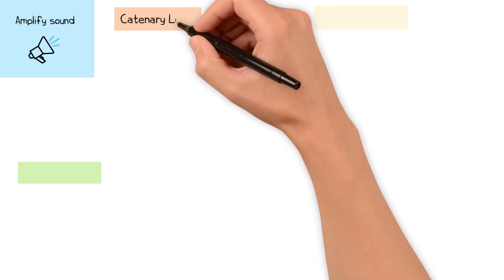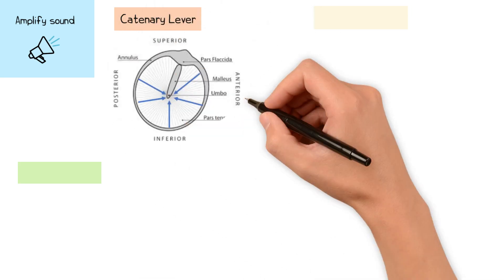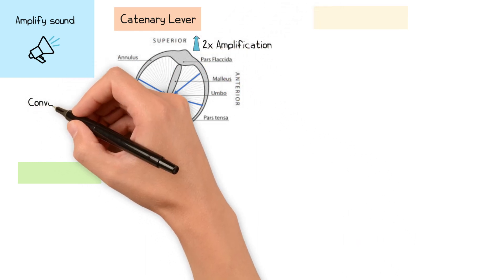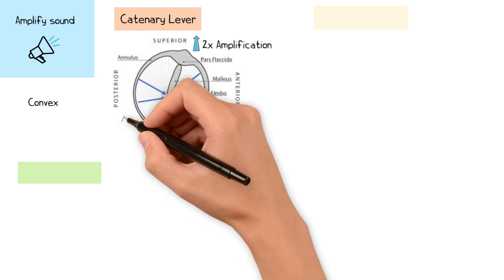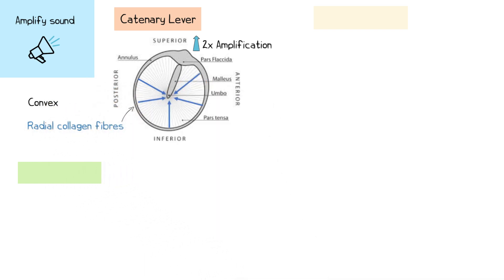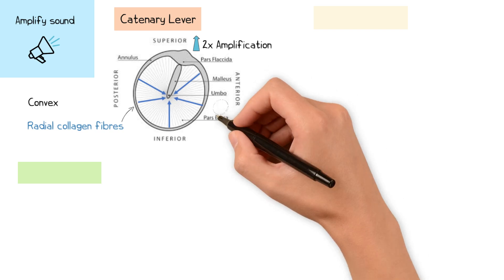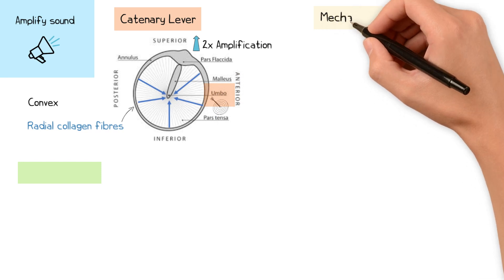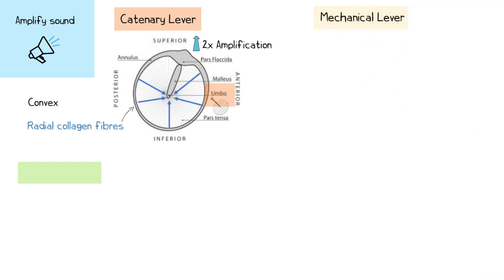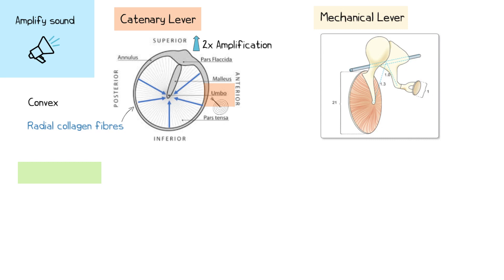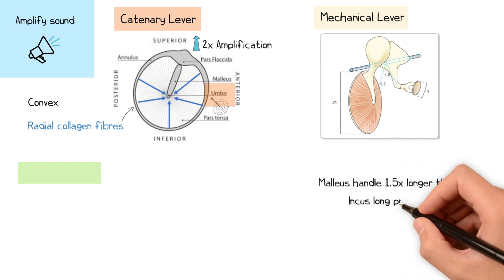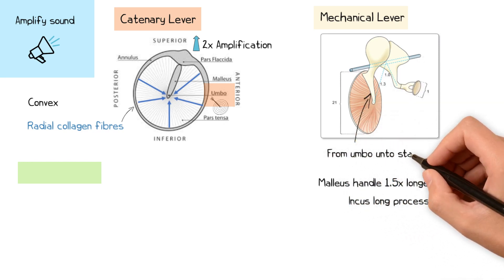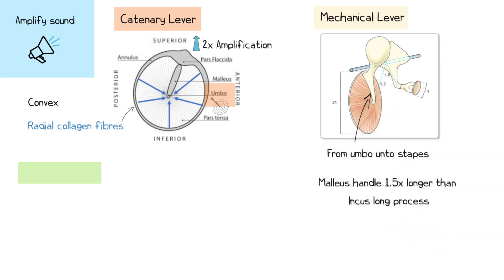The first is the catenary lever, which results in a two-fold increase in sound amplification. This is due to the convexity of the tympanic membrane and the radial direction of the collagen fibres within the tympanic membrane, which focuses sound energy directly onto a single point called the umbo. The ossicular chain also has a mechanical lever effect, because the handle of the malleus is approximately one and a half times longer than the long process of the incus. As a result, this amplifies the force exerted from the umbo onto the stapes superstructure.